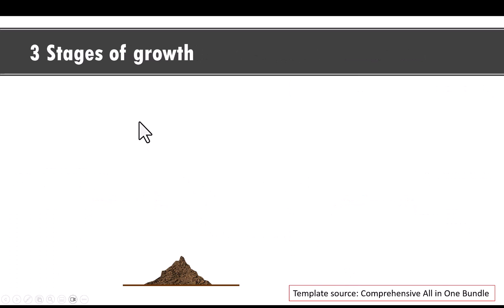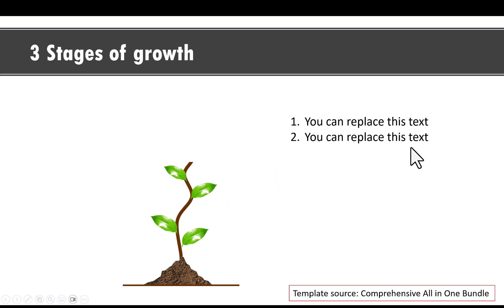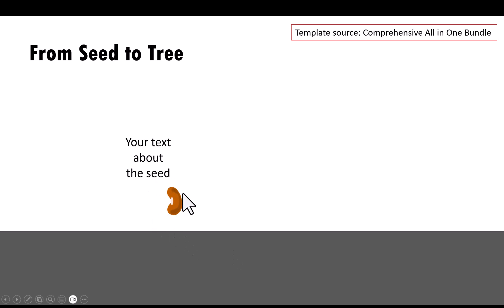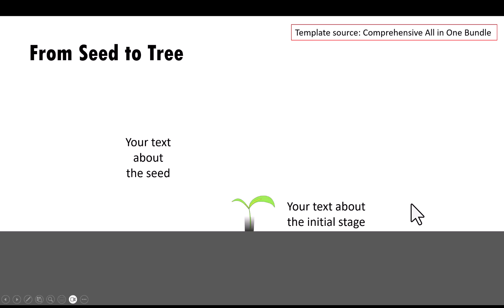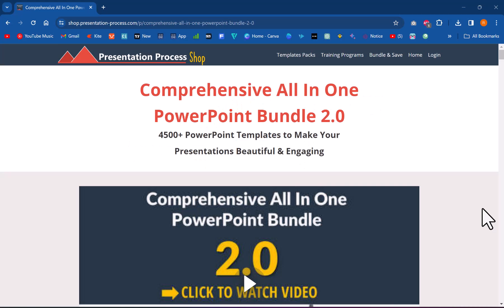Another way to show a timeline is to use an analogy — here we show three stages of growth. On a click, the first stage is shown, you write your text, then we nurture a little bit more and show the second stage, and so on. You can also use the analogy of transformation from seed to tree: the seed stage, then placing the seed in the dirt with initial growth, and finally the full bloom stage where everything blooms into a beautiful tree. A simple timeline can be visualized in so many different ways with a bit of creativity and PowerPoint animation.